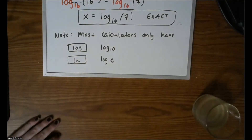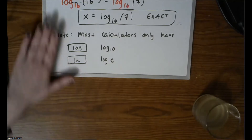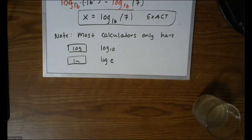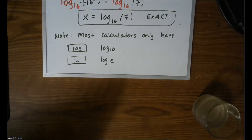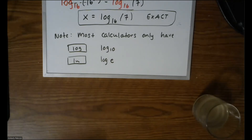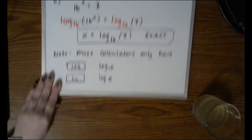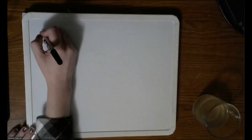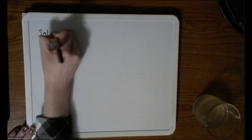Let's continue solving a few more equations, and specifically I want to focus on the natural log and see how valuable it really is. Exponential growth occurs all over in nature — in biology, forestry, chemistry, and statistics.